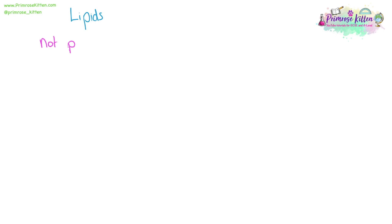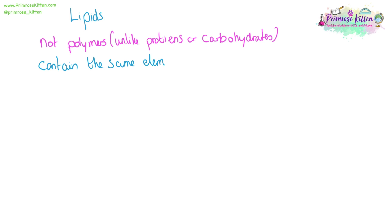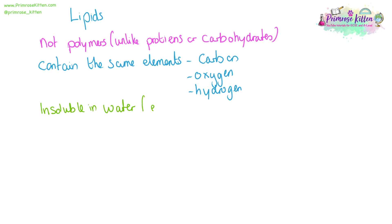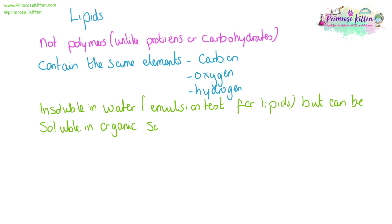Lipids are not polymers, unlike proteins and carbohydrates. But they contain the same elements: carbon, oxygen, and hydrogen. They are insoluble in water, which means one of the ways we can test for them is the formation of an emulsion — the emulsion test for lipids. But they can be soluble in organic solvents such as alcohol or acetone.